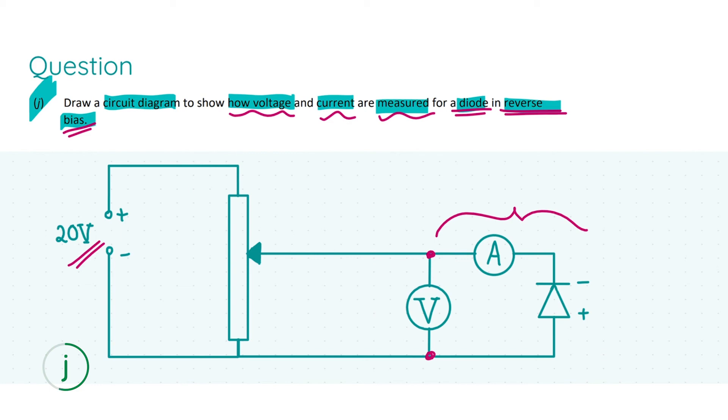Ammeters are always in series with the voltage source so you can imagine a current going through the ammeter which is what it needs to do to measure the current. That's the whole purpose of an ammeter. We're going to give two marks for the voltmeter and two marks for the correct arrangement of the ammeter.